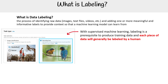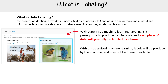labeling is a prerequisite to produce training data, and each piece of data will generally be labeled by a human. On the left-hand side, that's an example of Amazon Rekognition, where it's trying to identify bounding boxes or classifying images under particular categories. That's an example of supervised machine learning that requires labeled data. With unsupervised machine learning, labels will be produced by the machine and may not be human readable.